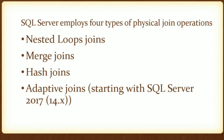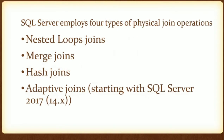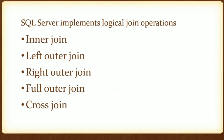SQL Server also implies four types of physical join operations: nested loop join, merge join, hash join, and adaptive join. Physical joins are joins that the user doesn't write in their SQL query — they are implemented inside the SQL Server engine as operators or algorithms. You can view physical joins from the estimated execution plan. In this demo, we are going to discuss logical joins; we will discuss physical joins in a separate video.